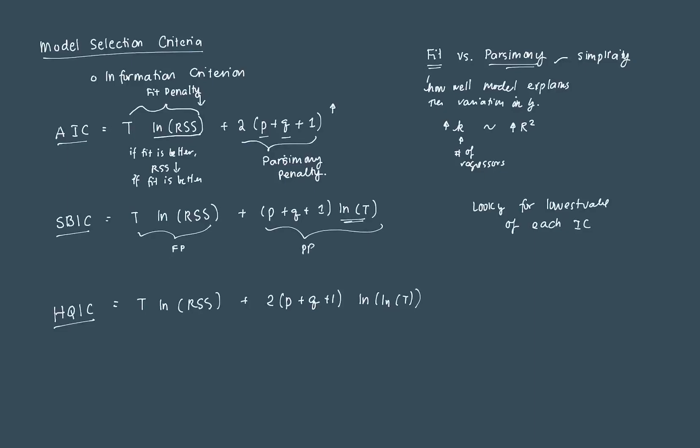The penalty of the SBIC and the HQIC is relatively more anchored on the parsimony part rather than the fit part. The AIC kind of balances it out. So again, as I've said in summary, to determine supposedly what is the most adequate lag length model for us, we need to look at the information criteria with the lowest value. And the information criteria that we are using is some mathematical representation of the trade-off between fit and parsimony. Thank you for your attention.